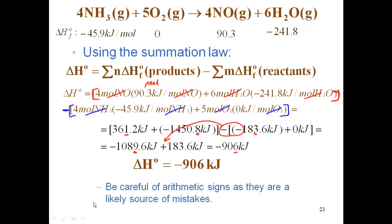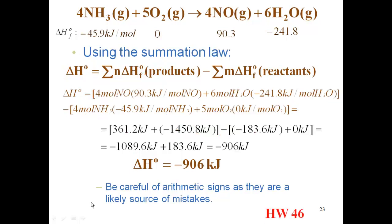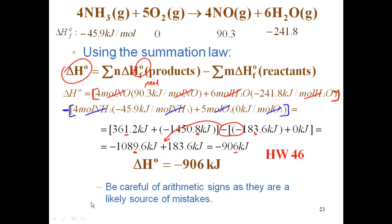The thing to be careful about on these problems is the arithmetic — make sure you understand that minus minus is a plus. Some homework problems will give you the delta H and ask you to solve for one of the delta HF values of a product or reactant. That involves slightly different arithmetic — you'll have to bring things to the other side and divide. Make sure you can handle the arithmetic with these problems. Homework 46 deals with using the law of summation.